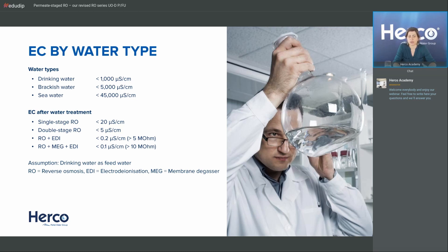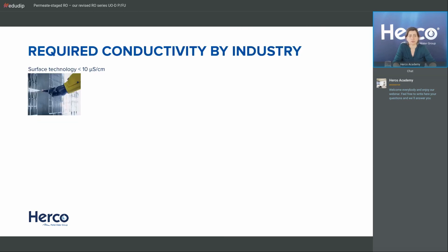You could have the combination of RO and EDI, or RO plus a membrane degasser (ROMEG) and EDI to reach even lower values. In many industries you need around 20 microsiemens per centimeter. Surface technology used to also require around 20, but nowadays many clients specify less than 10 microsiemens per centimeter — which is already between the stages. So if you have a single-stage RO installed and now need less than 10, you need to think about a double-stage permeate-staged RO.